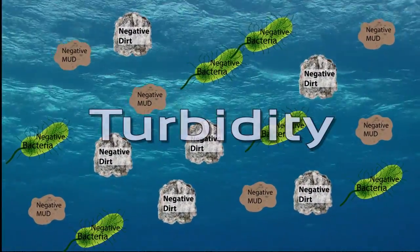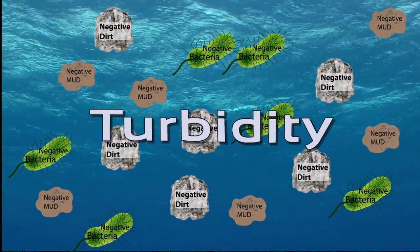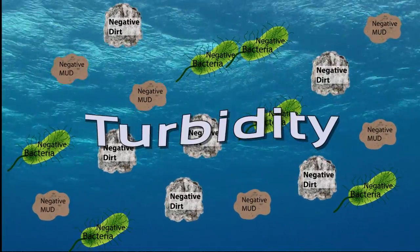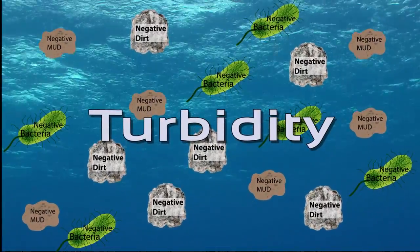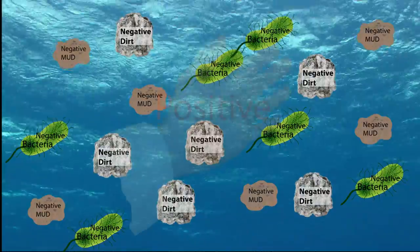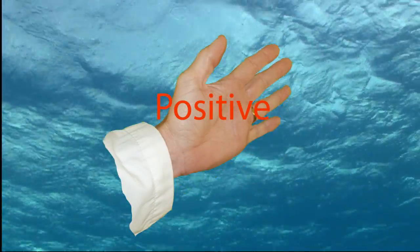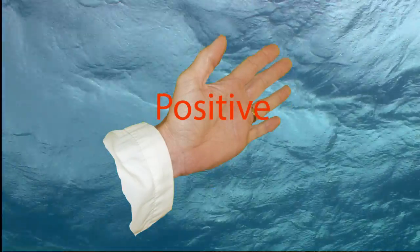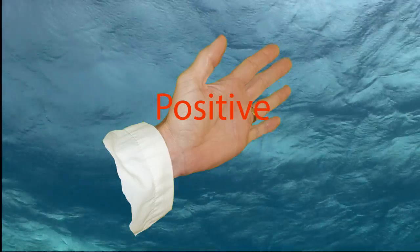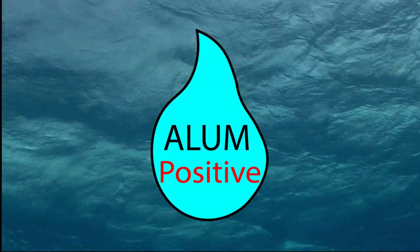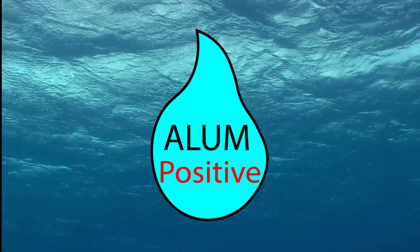The balloons represent all of the particles in the raw water that are too small and light to settle out or be filtered out on their own. My heavy positively charged hand represents the coagulant we dose into the water. Typically it's alum, but it can be other chemicals as well.